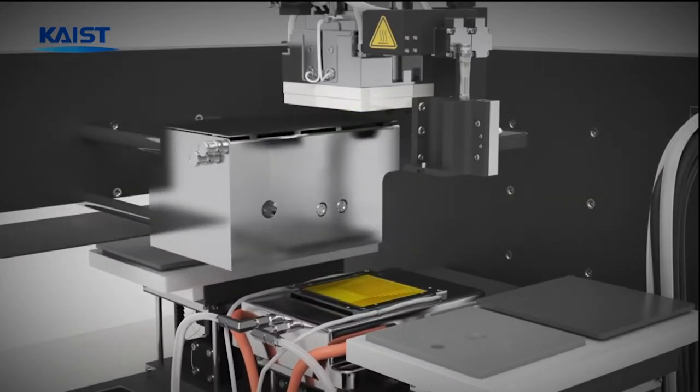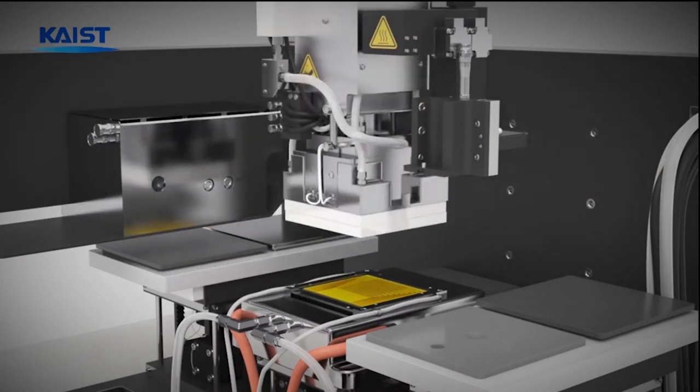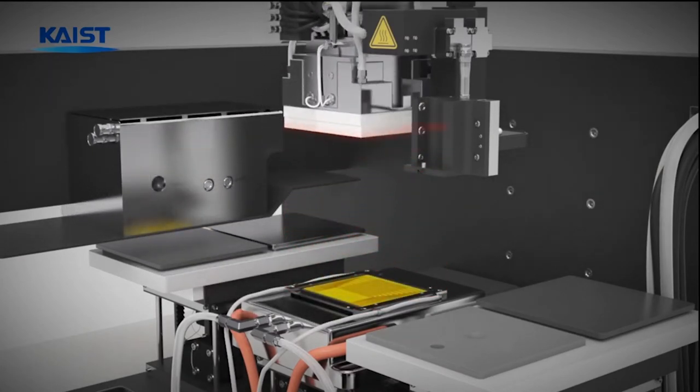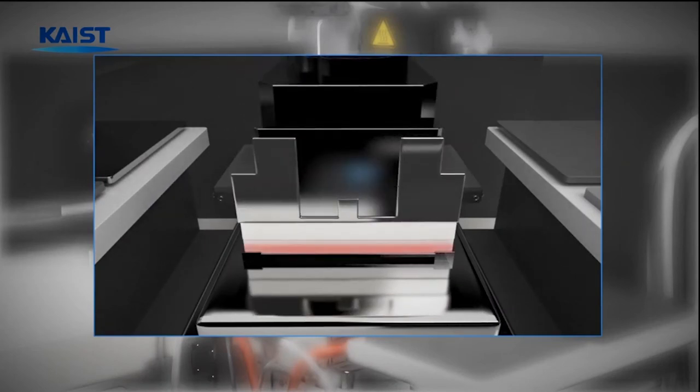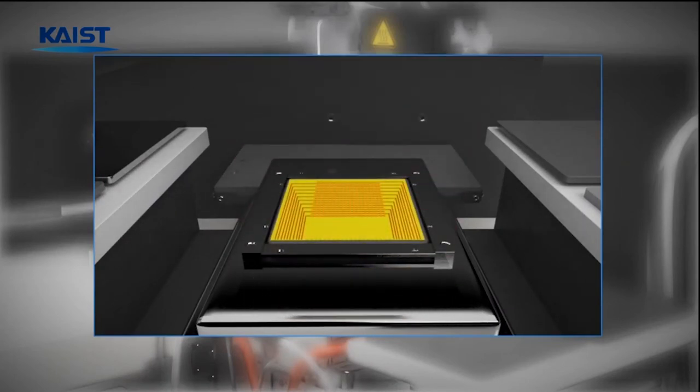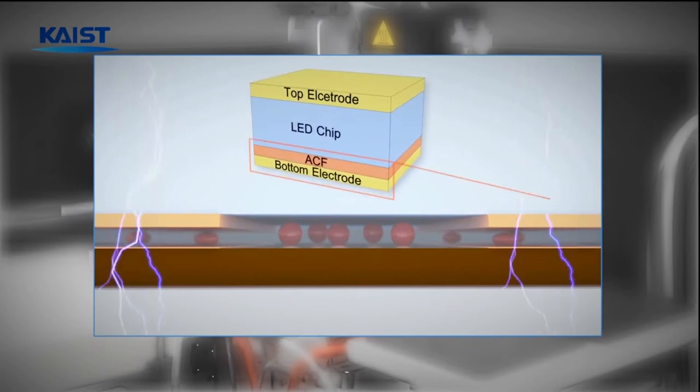The LED chips are transferred onto the bottom flexible electrode substrate by thermal compression bonding through an anisotropic conductive film. Simultaneously, conductive particles in the anisotropic conductive film interconnect the chips to the electrodes, which enable flexible vertically structured LEDs.